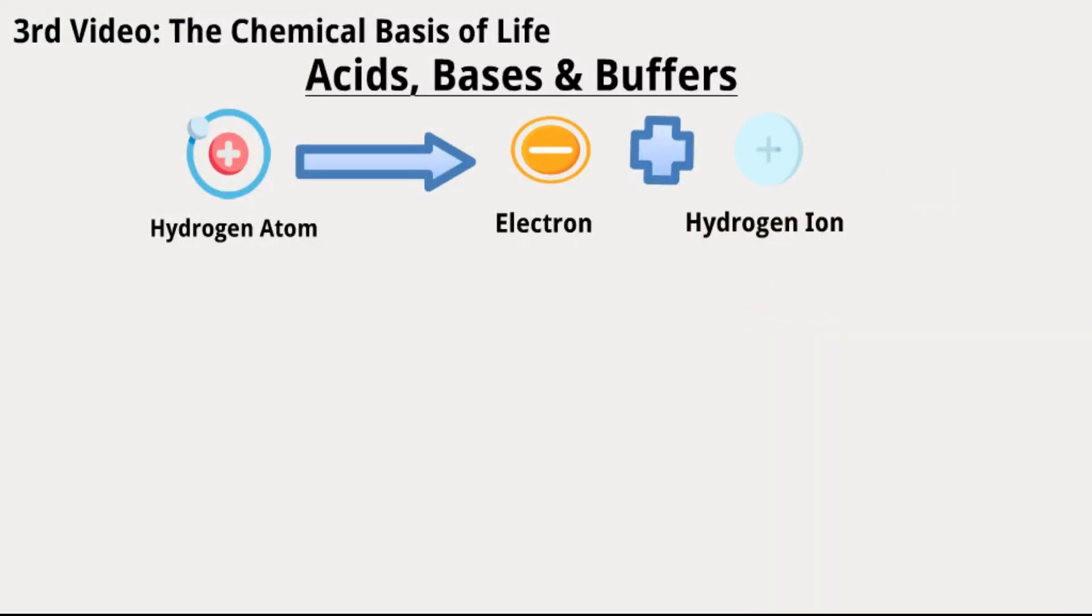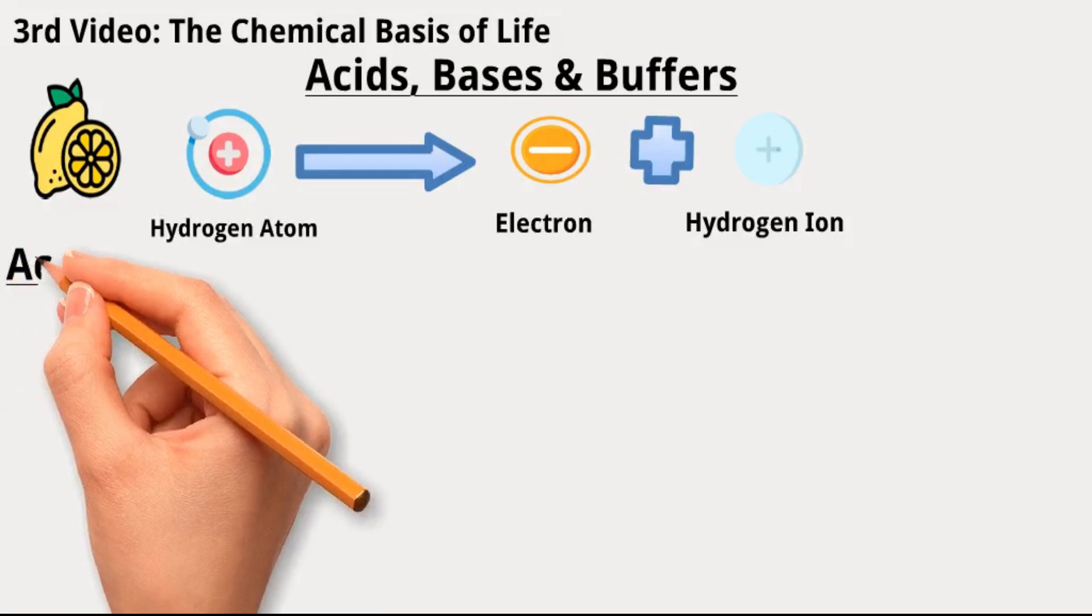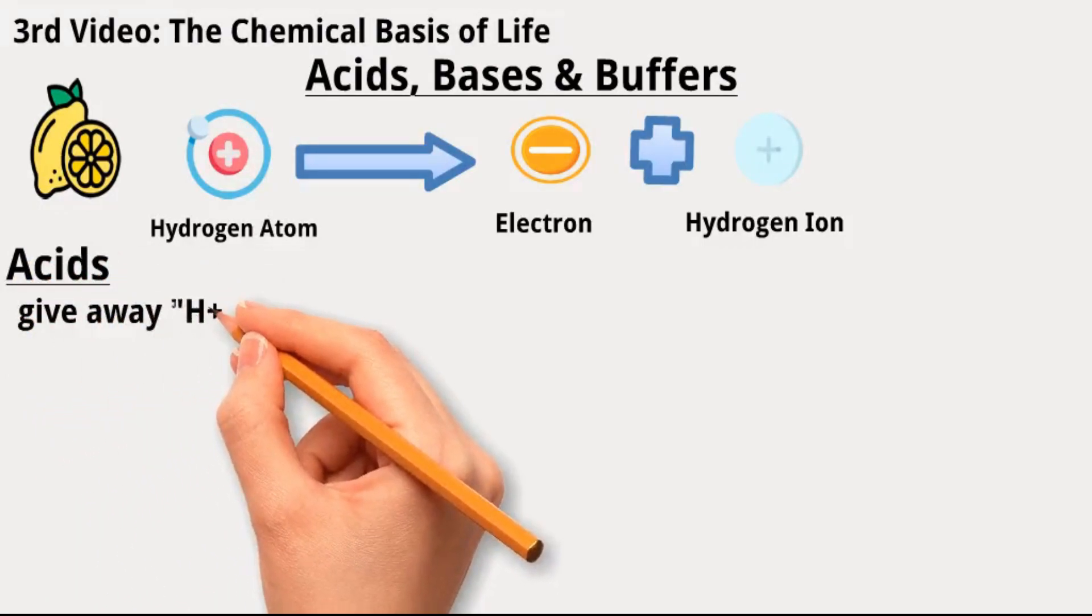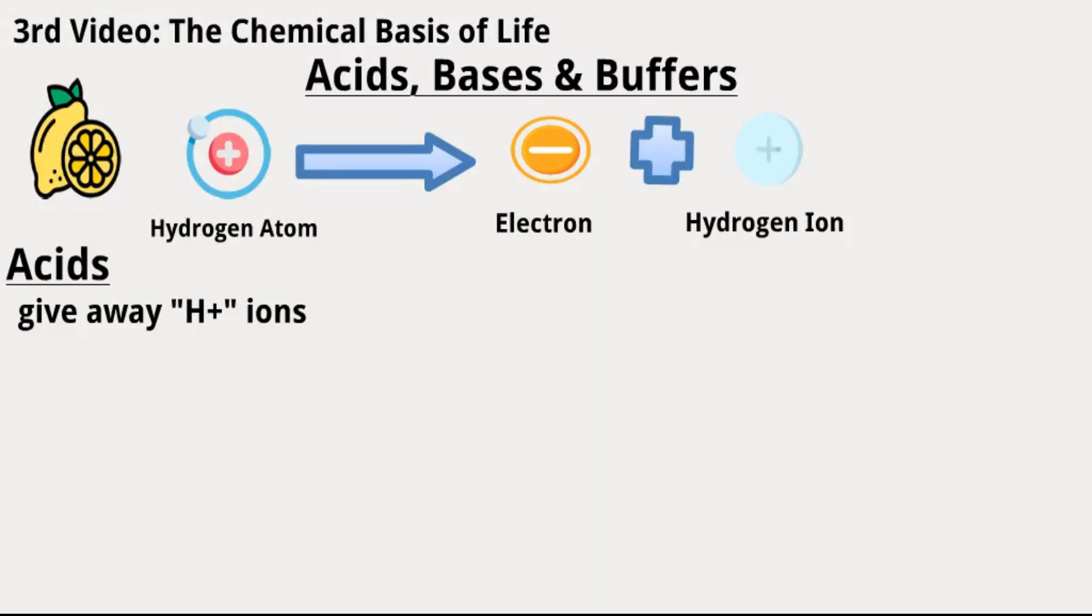When you eat something sour, like a lemon or a sour gummy, you're experiencing acidity. In the pH world, acids are like those sour candies because they love to give away H-plus ions. The more acidic something is, the more it gives away these little sour ions.